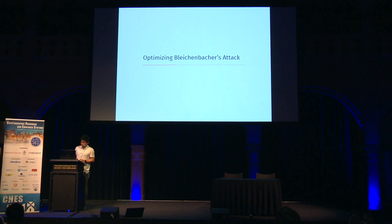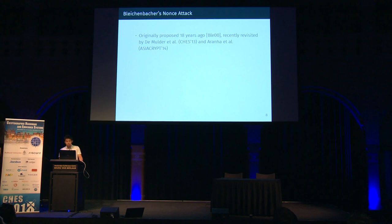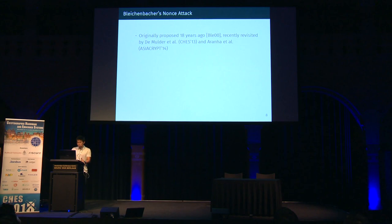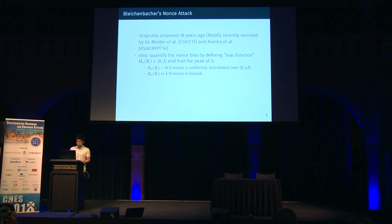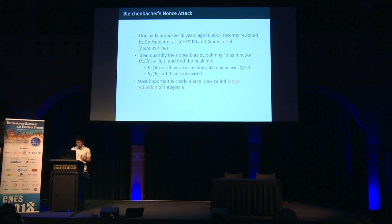Now I'll present our first contribution: the optimization of Bleichenbacher's attack. Bleichenbacher's nonce attack was originally proposed 18 years ago, but was only recently revisited by Maud et al. at CHES 2013 and Arany et al. at AsiaCrypt 2014. The main idea is to quantify the nonce bias using a bias function — a real value between 0 and 1. The bias function becomes 0 if the nonce is uniformly distributed, and close to 1 if the nonce is biased. The most important and costly phase is the so-called range reduction of integers H, which is necessary to detect the bias peak correctly and efficiently.